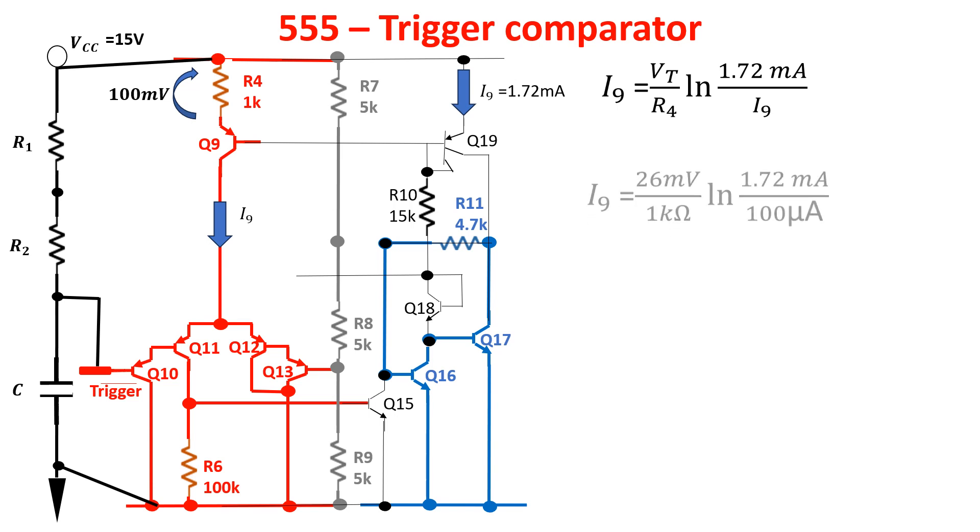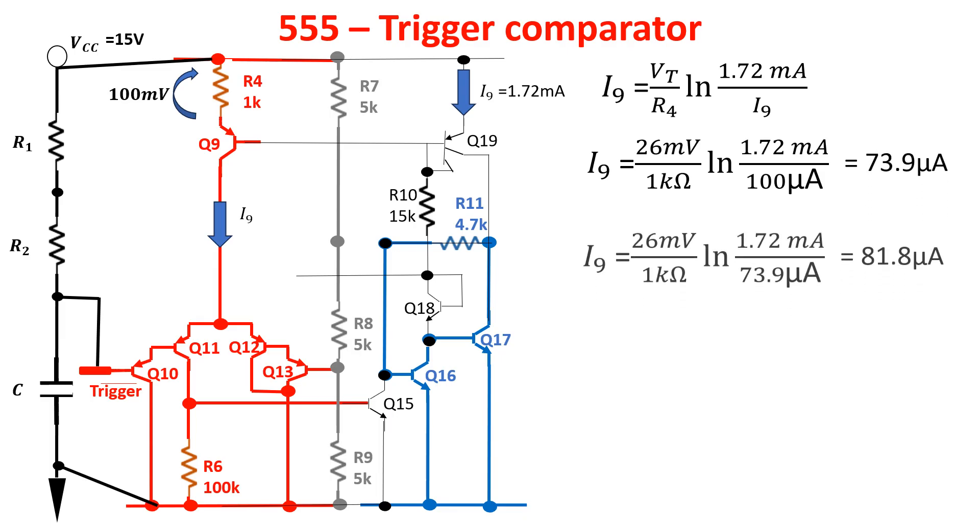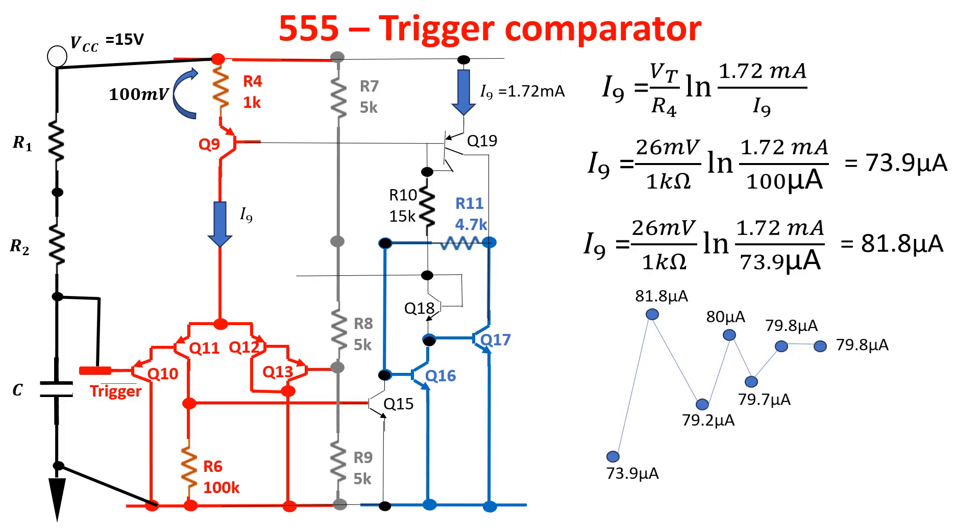Putting 100 microamps in the formula we get I9 equals 73.9 microamps. Now we put this new value in the formula and we get 81.8 microamps. Keeping doing this we get this behavior where we see the result converge to 79.8 microamps. So I9, the output current of the Widlar current mirror, is equal to 79.8 microamps. I leave in the description a link about a detailed description about the history and the working of the 555 integrated circuit.